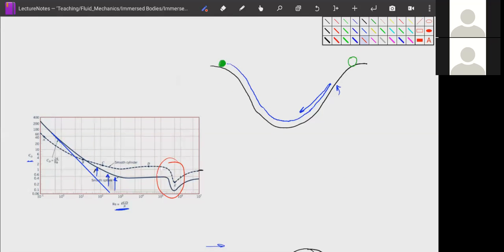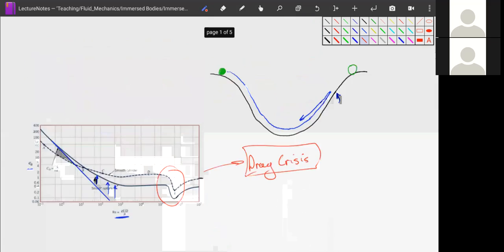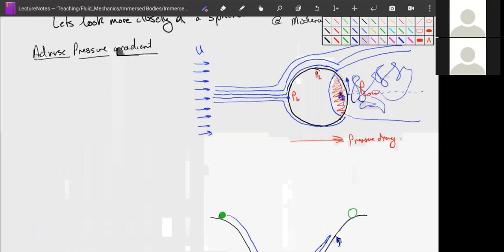This, this is the drag crisis, quote unquote. The drag crisis, let's write that out. This is called the drag crisis. And it baffled people for a long time. But we can actually make sense of this now with what we know about laminar and turbulent boundary layers.